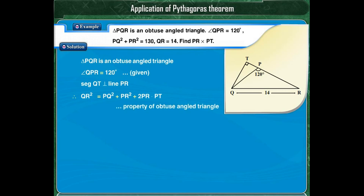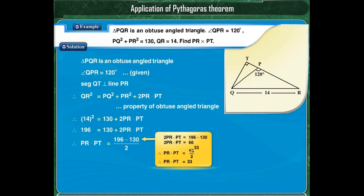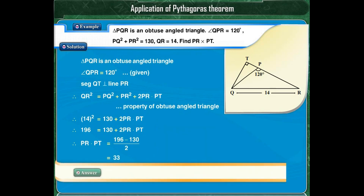Substituting the values of QR and PQ squared plus PR squared, we get 14 squared is equal to 130 plus 2 into PR times PT. Thus, by solving, we get the value of PR into PT which is 33. Therefore, PR into PT is equal to 33.